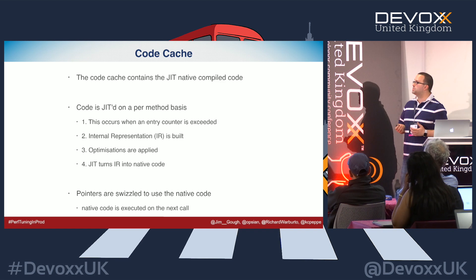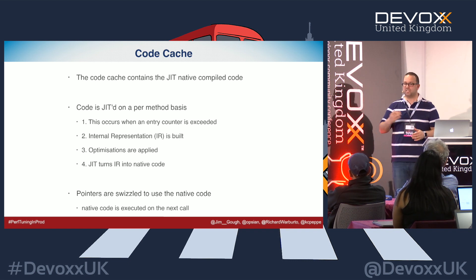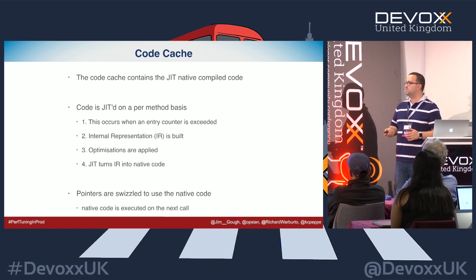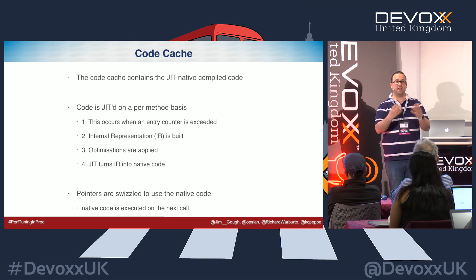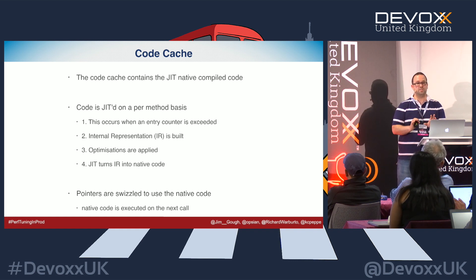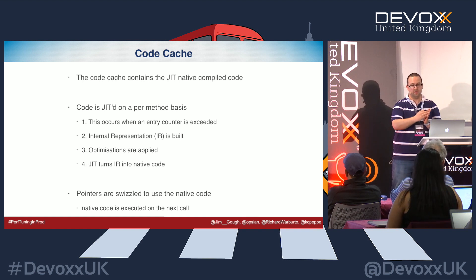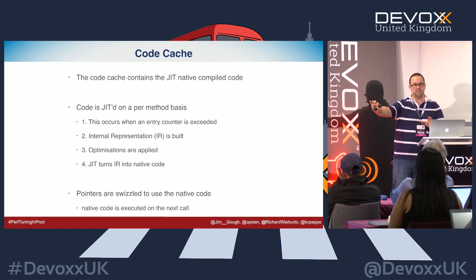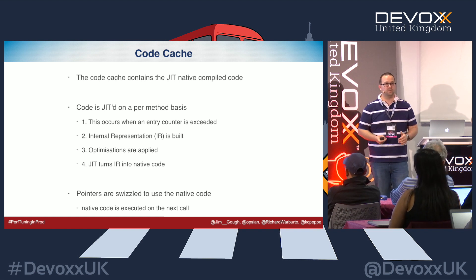The code cache is JIT compiled on a method-by-method basis, based on when the barometer entry count is exceeded. It builds an internal representation, applies optimizations as a tree, and puts that into native code. What happens then is pointer swizzling: at runtime it checks where the code lives — if interpreted, it looks at the code segment inside the class itself; otherwise it swivels that pointer to the native code and executes that instead. Those pointer swizzles are also how it's able to change back.